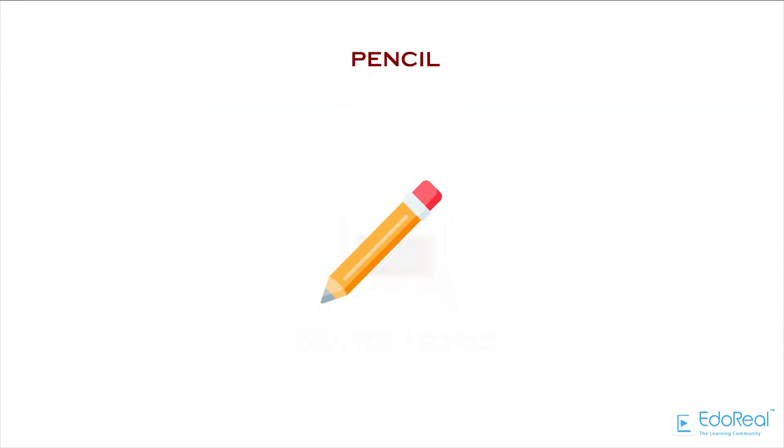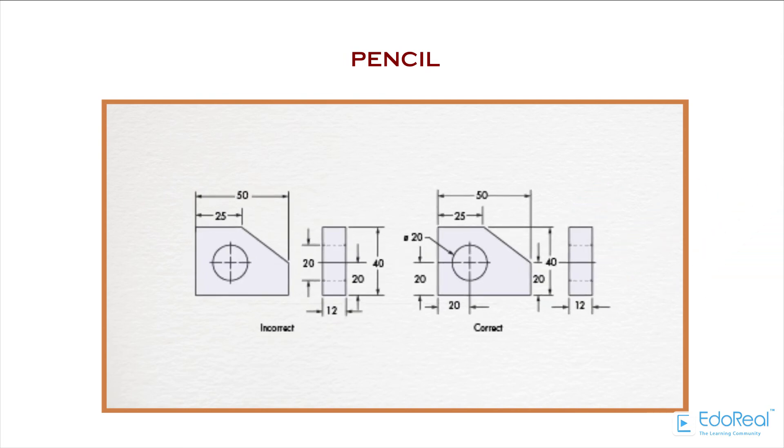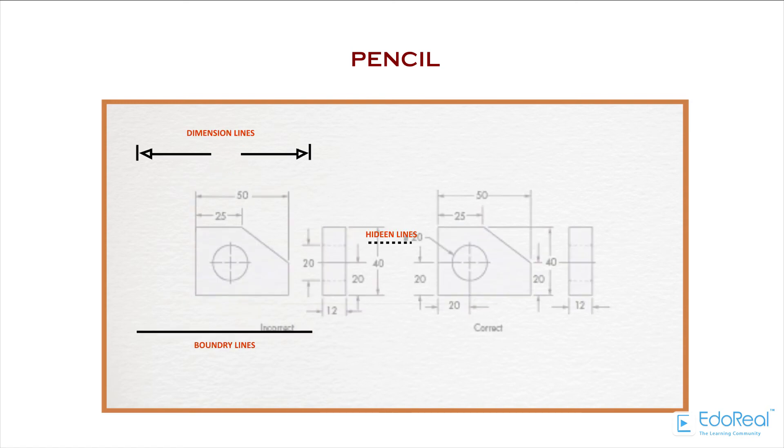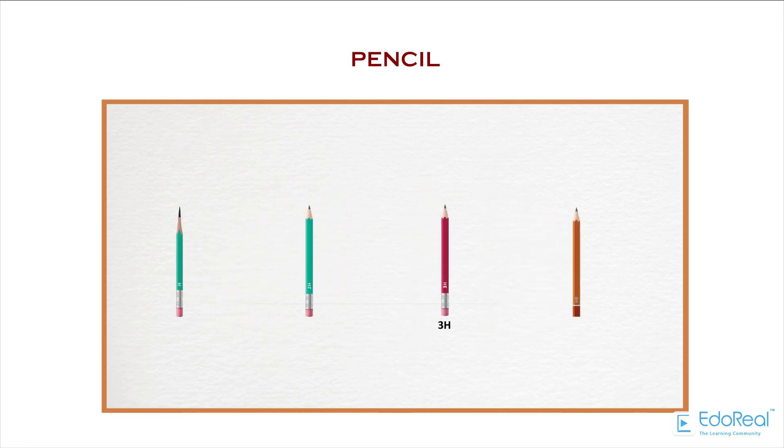Pencil is used to draw on paper. Any type of pencil is not suitable for drawing. There are some limitations. The drawing appearance should be very neat and understandable. Every line of the drawing should indicate its importance. The following pencils are used in engineering drawings: 3H Pencil, 2H Pencil, H Pencil, HB Pencil.